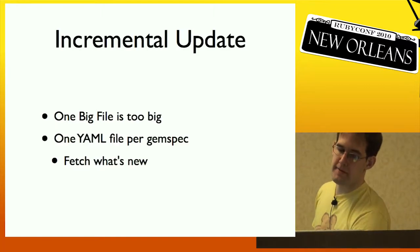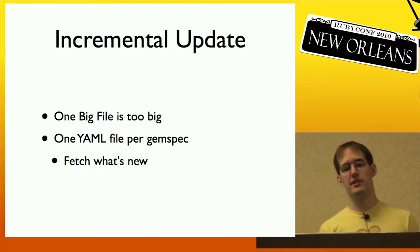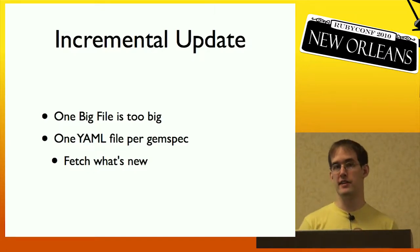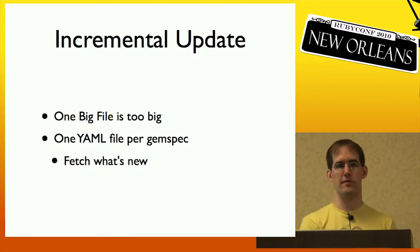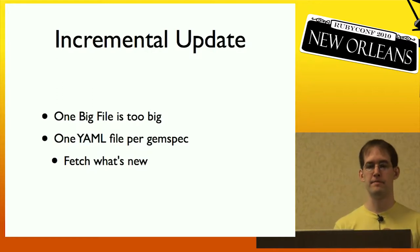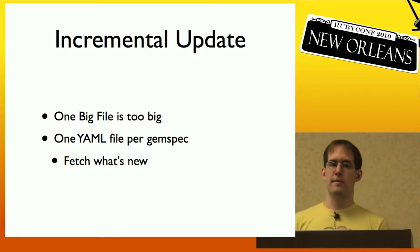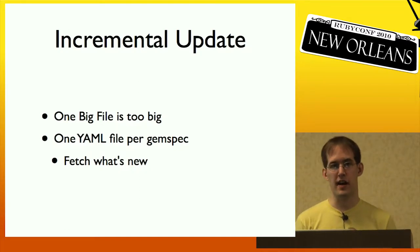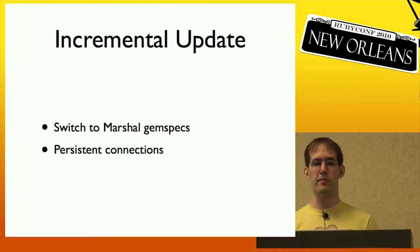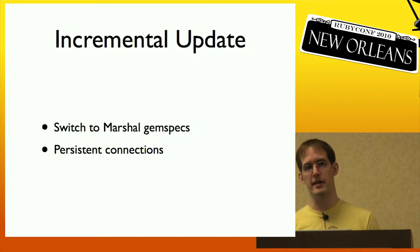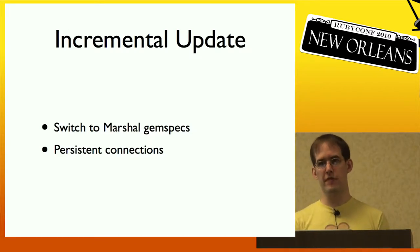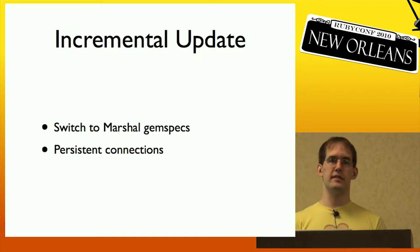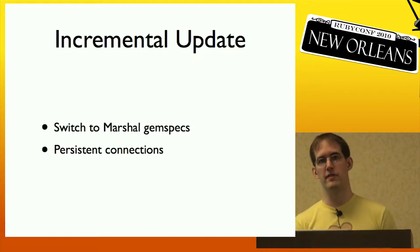So incremental updates were added. With incremental updates, RubyGems would fetch individual YAML files to update the local cache. In theory you'd only have to download a few small files instead of a big file. But this still took a long time. So the format was switched to Marshall, and that helped a little because files were smaller, and persistent connections were added so you didn't have to make a round trip to the server every time.